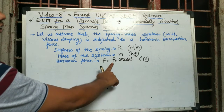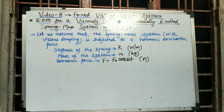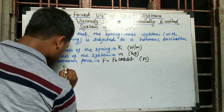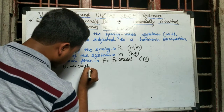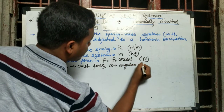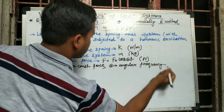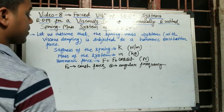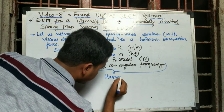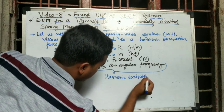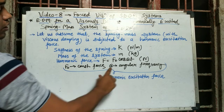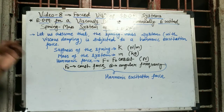The harmonic force has a constant force F₀ and ω is the angular frequency. The unit of F₀ is Newton and the unit of ω is radian per second. So these three things — spring stiffness k, mass m, and harmonic force F₀ cos(ωt) — are our assumptions.